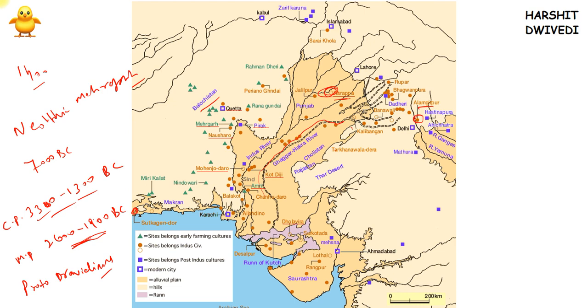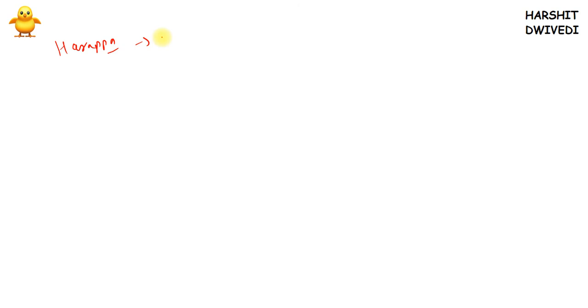When archaeologists were called and started searching, they found evidence of an ancient settlement. This is how these sites were excavated. Harappa was the first site, excavated in 1921 by Daya Ram Sahani.